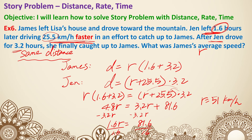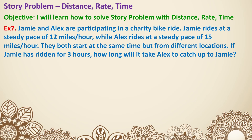So example six is another same-distance question. We set up the distance formula for James and for Jen, then set them equal to solve for R. Moving on to the very last example: Jamie and Alex are participating in a charity bike ride. Jamie rides at 12 miles per hour and Alex rides at 15 miles per hour. If Jamie has already ridden for three hours, how long will it take Alex to catch up to Jamie?